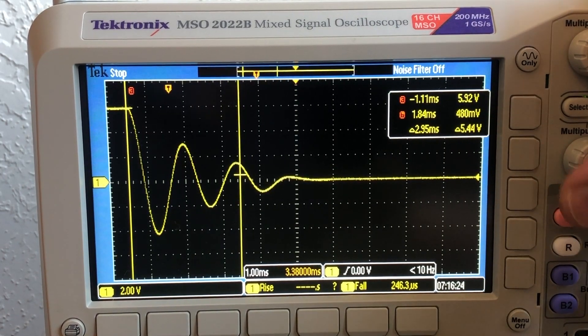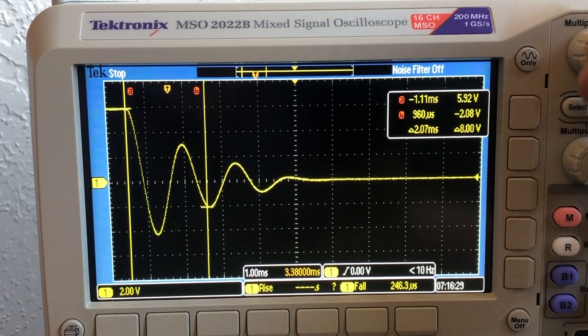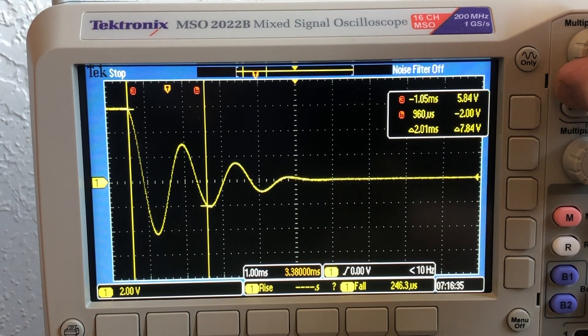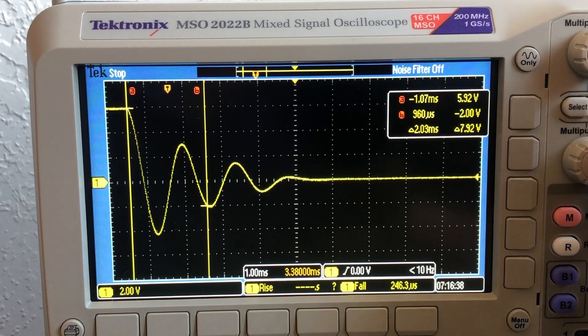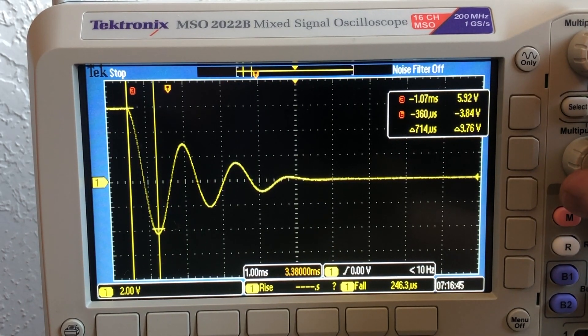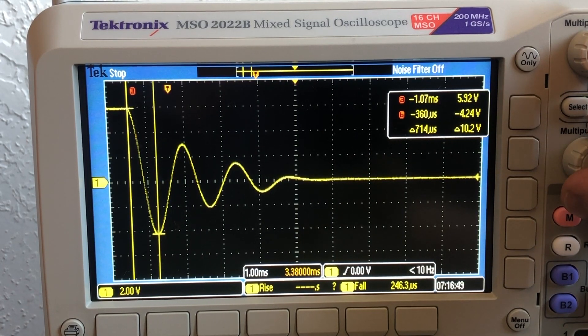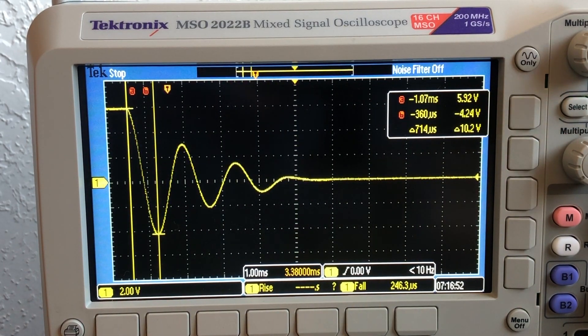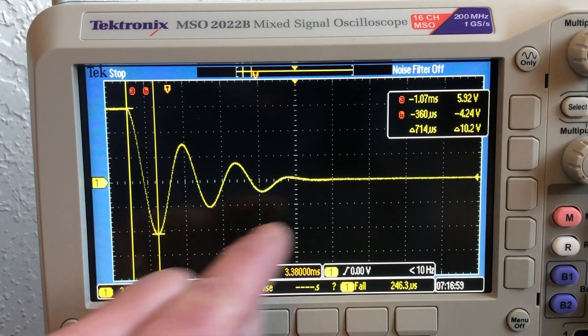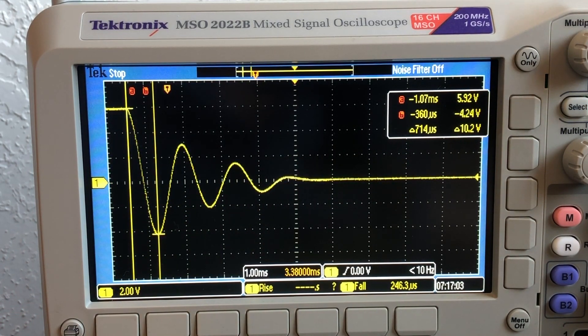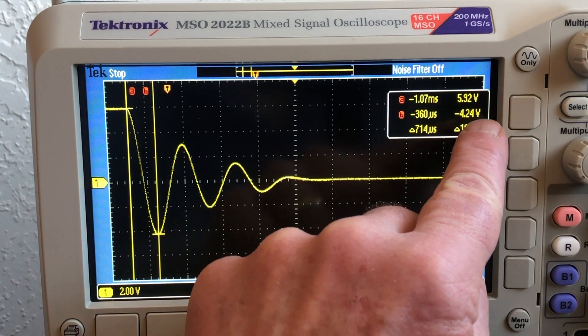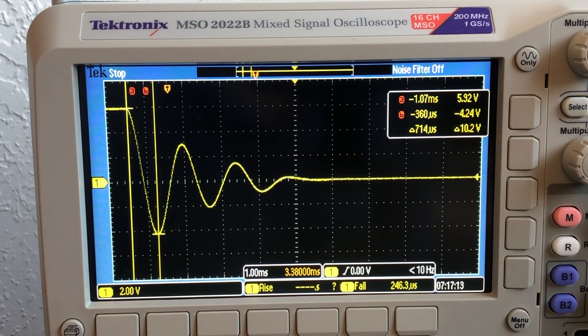Now let's put the second cursor over here and we'll look at the delta times, right when this one drops. Here's the first peak. It looks like there was a delay, a delta time of 714 microseconds from the top to the bottom, and you can see that the value of the bottom peak here is minus 4.24 volts.